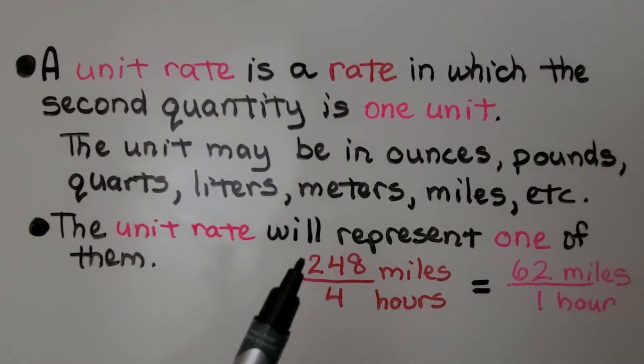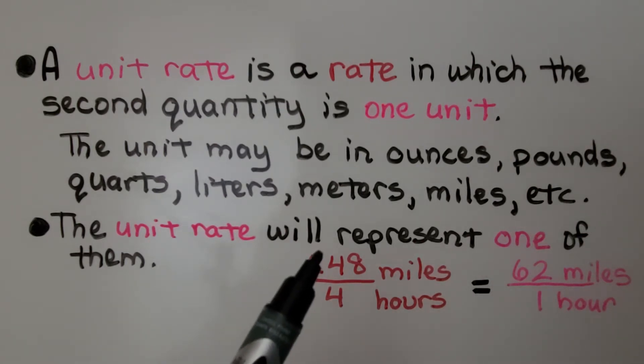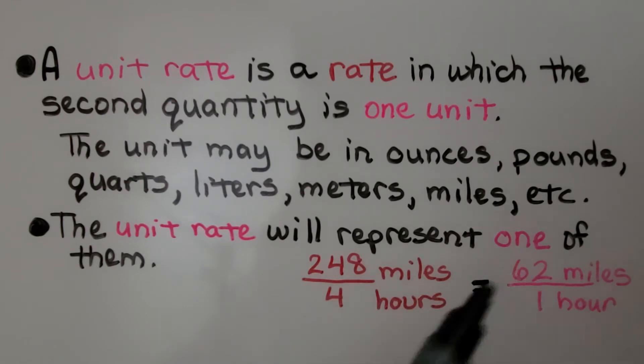If we have 248 miles traveled in four hours, this is our rate. Our unit rate would be 62 miles in one hour. We could do 248 divided by 4 to get the 62.